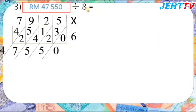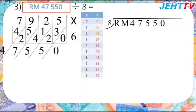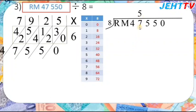We're not finished — we still need to divide by 8. Prepare the times table of 8. The first 2 digits are 47. Do we have 47 in the 8 times table? No, but less than 47 is 40, so 8 times 5 equals 40. Then 47 minus 40 equals 7. Bring down the 5 to get 75.